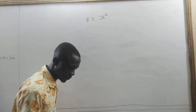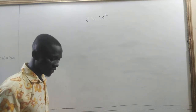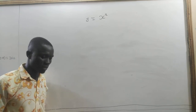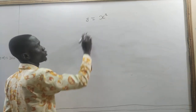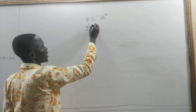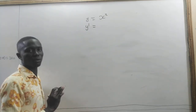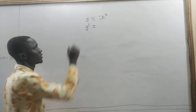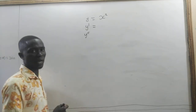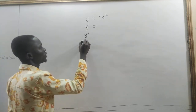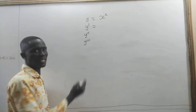Under Lagrange's notation, if we have y equal to x squared, y-prime means differentiate this only once. If we take y-prime-prime it means differentiate it twice. If we take y-prime-prime-prime it means differentiate it three times.